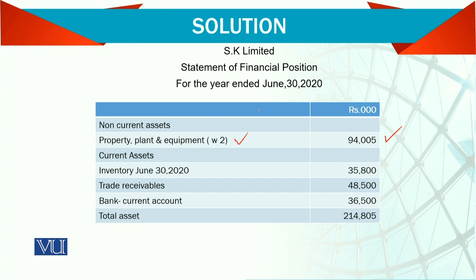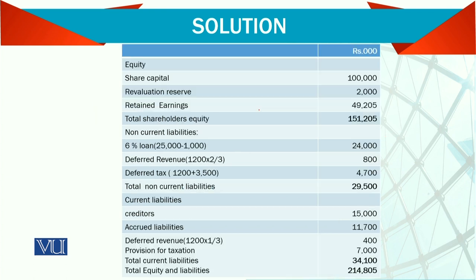That detail is presented in the notes to the accounts. So total assets are calculated. The equity, reserves, and retained earnings figures come again from the statement of changes in equity — these three figures are there. So the total equity is 151,205.